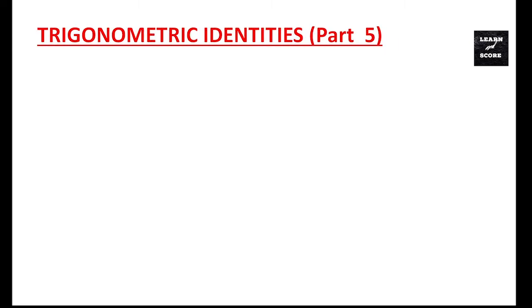Hi students, today we are discussing Trigonometric Identities Part 5, that means Exercise 8.4, question number 5 — the 6th, 7th, and 8th subparts. First let us discuss question number 5, 6th part.